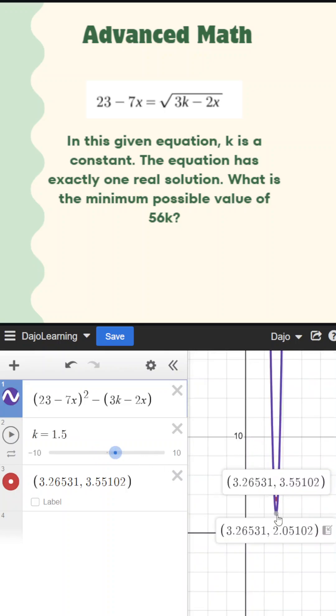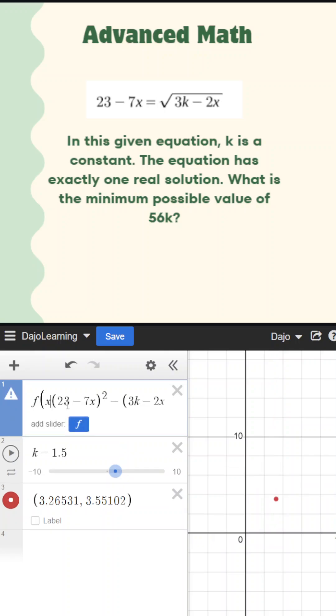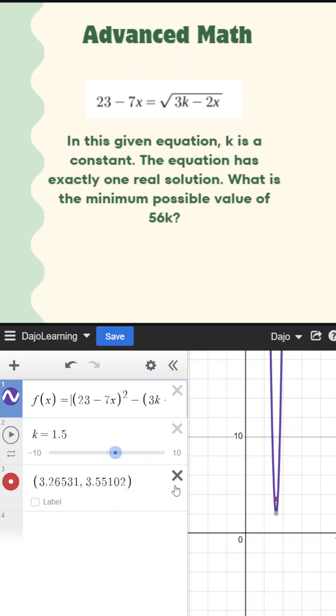So because we know what our vertex is, what else do we know? We also know it's one real solution. And what do we know when it comes to the vertex and the graph being one real solution? Well, we know that our y value has to be zero, because that's the only time you can have one real solution.